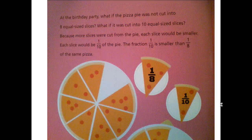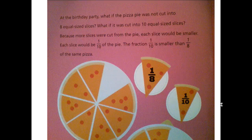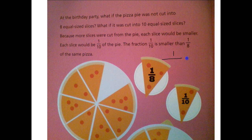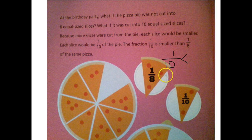At the birthday party, what if the pizza pie was not cut into eight equal-sized slices? What if it was cut into ten equal-sized slices? Because more slices were cut from the pie, each slice would get smaller. Each slice would be one-tenth of the pie. The fraction one-tenth is smaller. You can see that that piece is smaller than one-eighth.